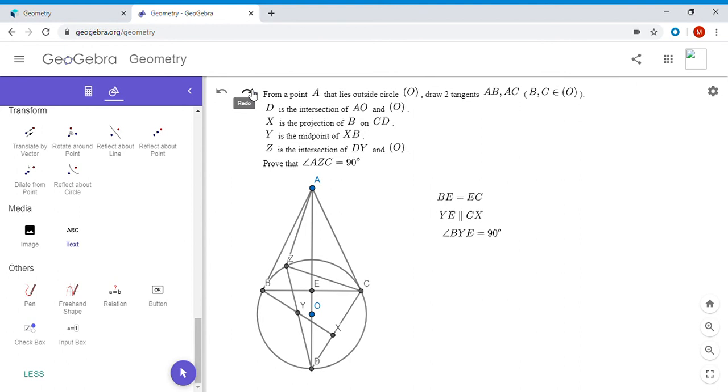So we have BY is 90 degrees. There's another benefit of constructing point E. We know that BZCD is a cyclic quadrilateral.